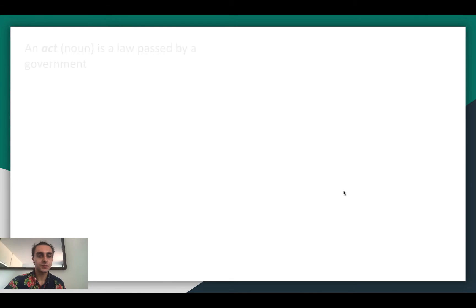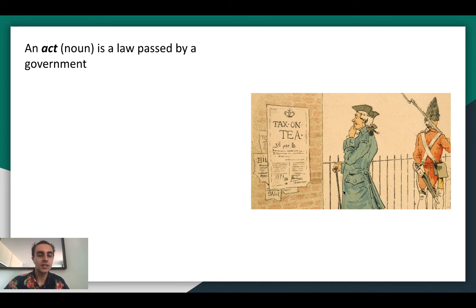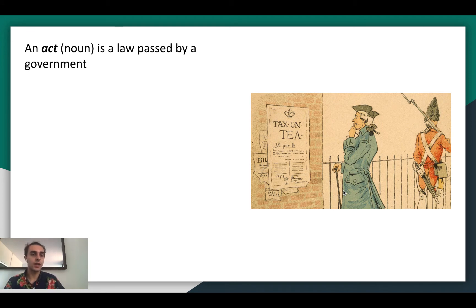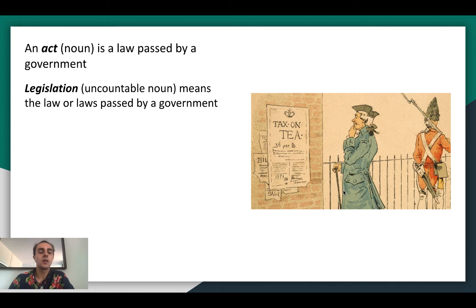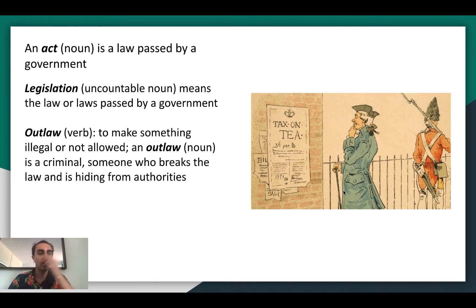An act is a law passed by a government. For example, the Tea Act was passed by Britain and allowed British people to bring their tea directly to American colonies and sell it there. So an act is just a law that's passed. Legislation is an uncountable noun meaning the law or laws passed by a government. So U.S. legislation is law or laws passed by the U.S. To outlaw is a verb meaning to make something illegal or not allowed.